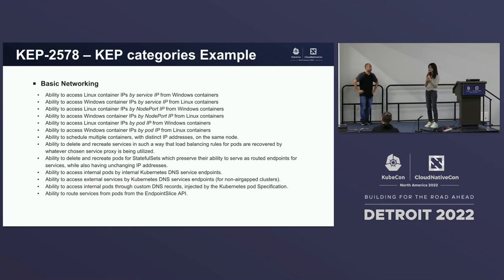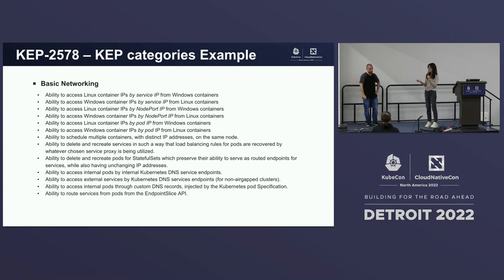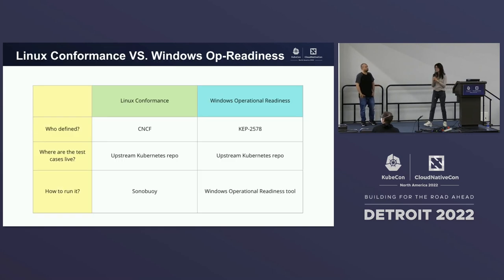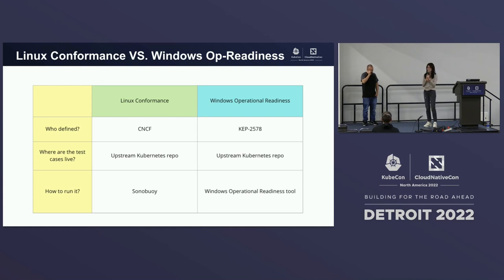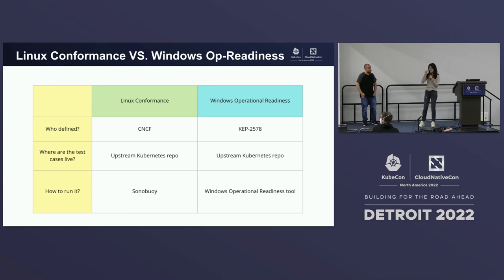Here's an example of what is included in the network category in this KEP. We list the functionalities we want to test for each category, and then match each functionality with its upstream implementation. Here's a quick summary of the difference between Linux conformance and Windows operational readiness: Linux conformance is official, defined by CNCF, while Windows operational readiness is defined by KEP 2578 and is not yet official. The implementation of all test cases lives in the upstream Kubernetes repo.